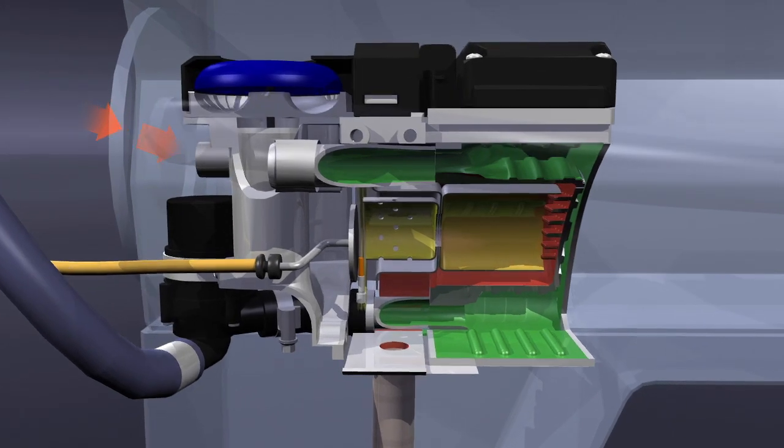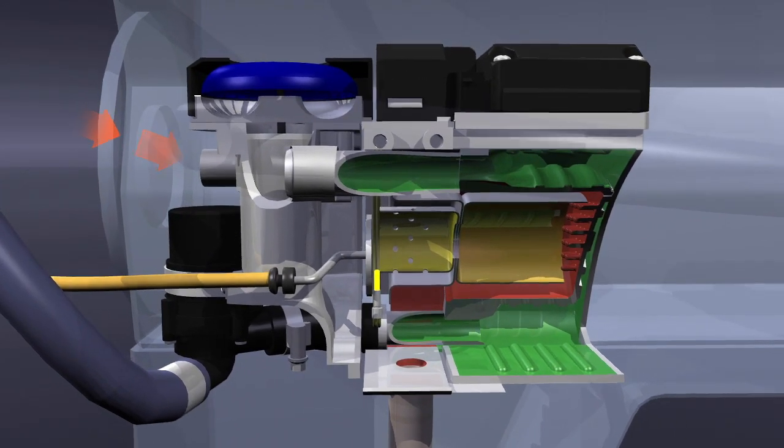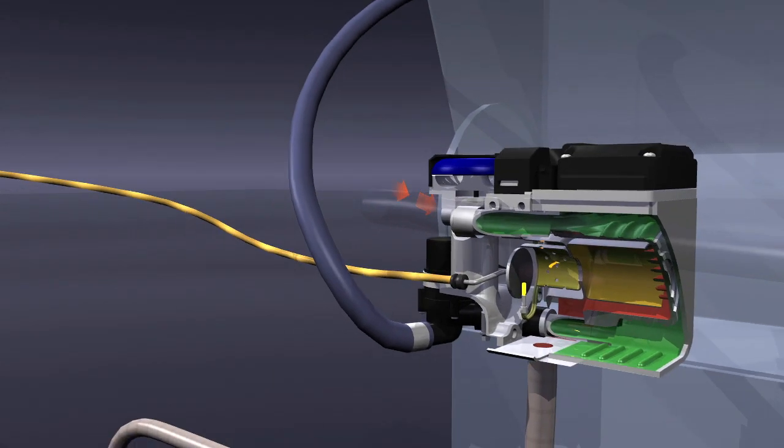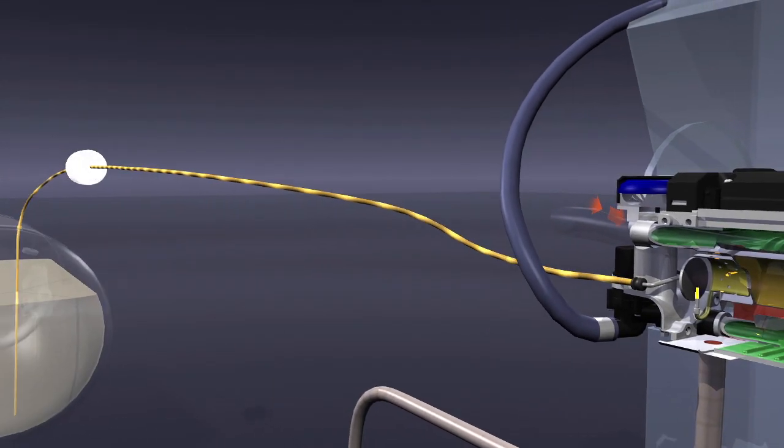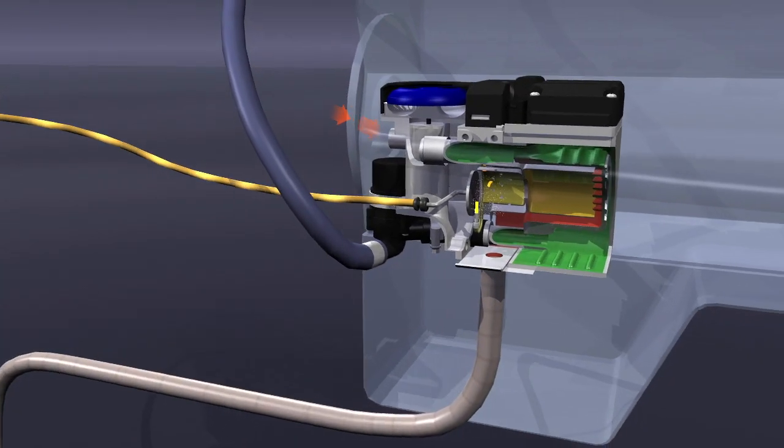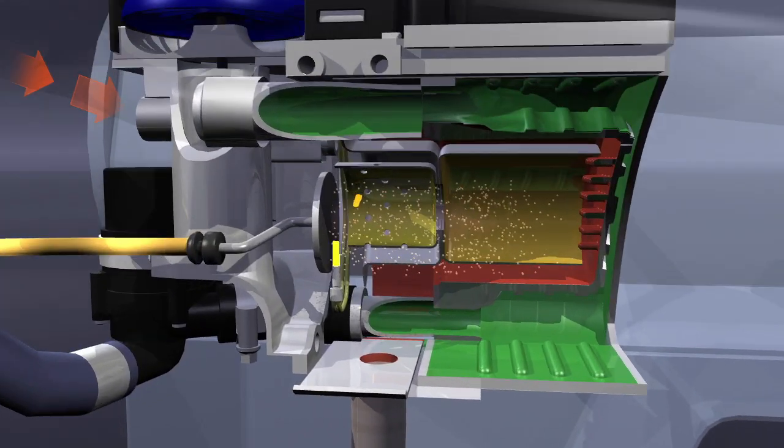Once the heater's been started, the glow plug is supplied with current and begins to glow. Ambient air is drawn into the combustion chamber and the fuel pump delivers drops of fuel from the vehicle's tank. The fuel is evaporated in a controlled process.